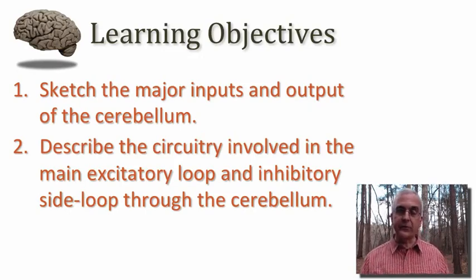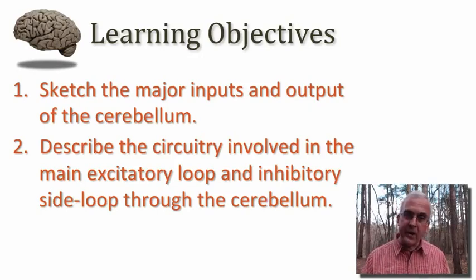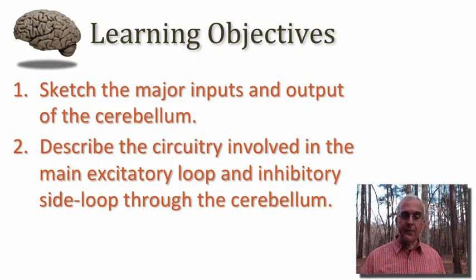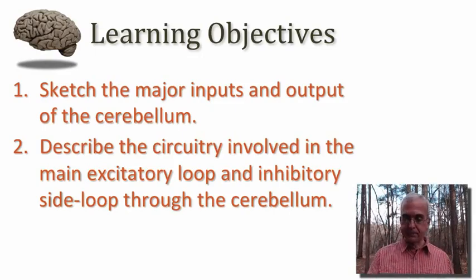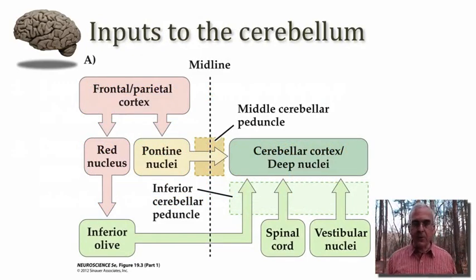We can conceptualize this circuitry as involving a main excitatory loop that runs through the deep nuclei of the cerebellum, and then an inhibitory side loop that runs up through the cortex, and then back down to the deep cerebellar nuclei before output leaves the cerebellum to influence circuits of upper motor neurons. Before we talk in detail about those circuits, I want to give you a broad overview of the inputs to the cerebellum and talk a bit about function.